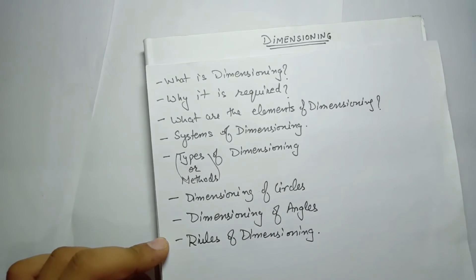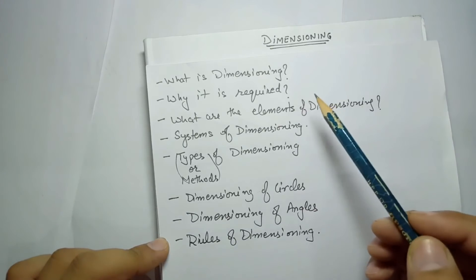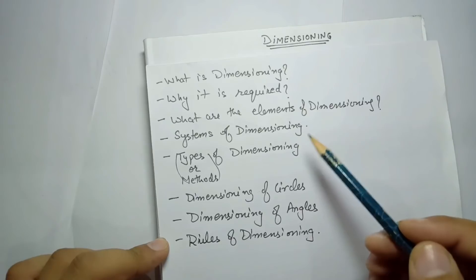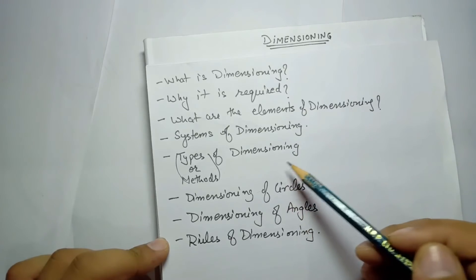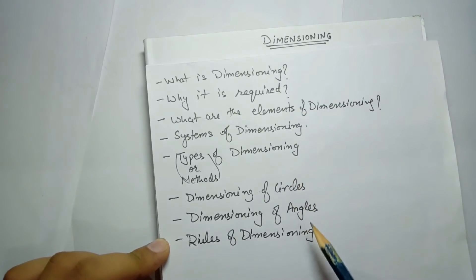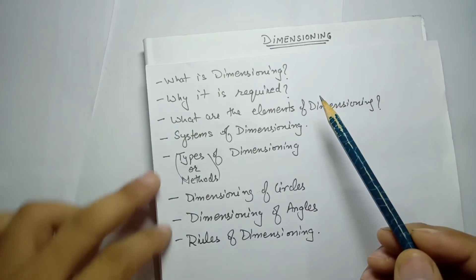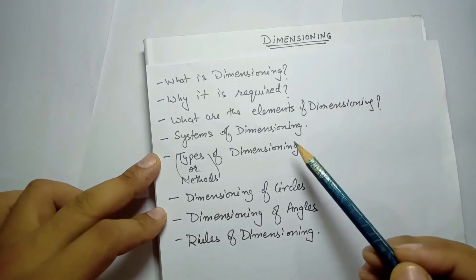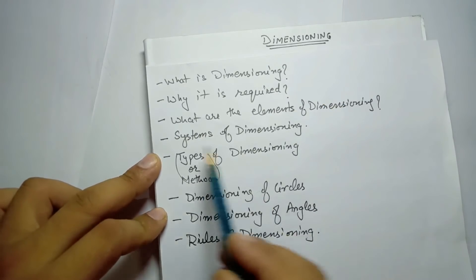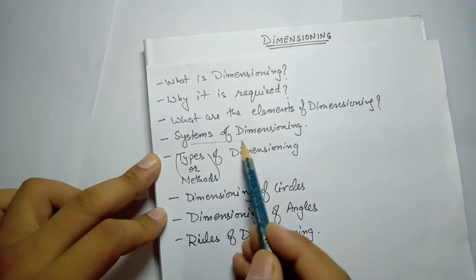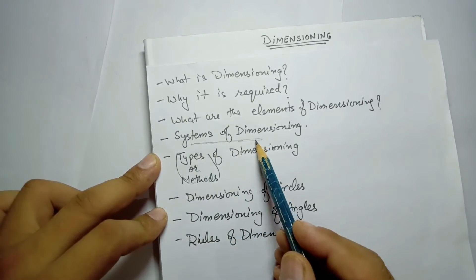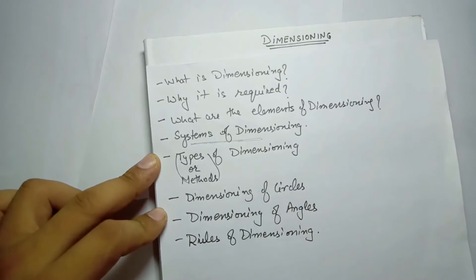Hello everyone. In this video we are going to practice dimensioning for topics covered in my previous video — what is dimensioning, why it is required, elements of dimensioning, systems and methods of dimensioning, dimensioning of circles and angles, and rules of dimensioning. In this video we will practice how to make perfect dimensioning. I have taken the topic of system of dimensioning — I will make a diagram and show you how to do the dimensioning.